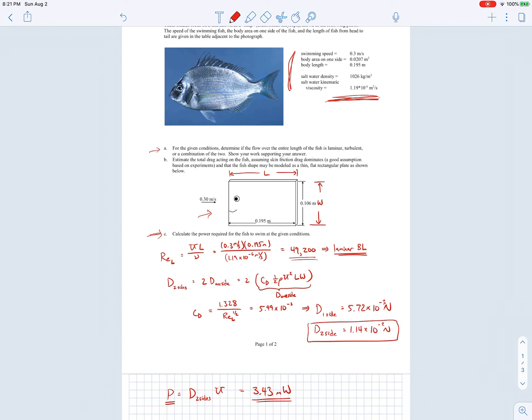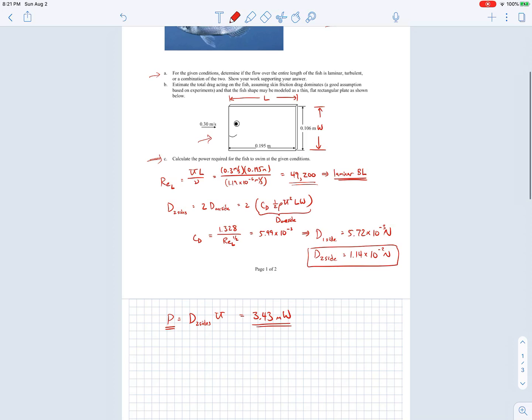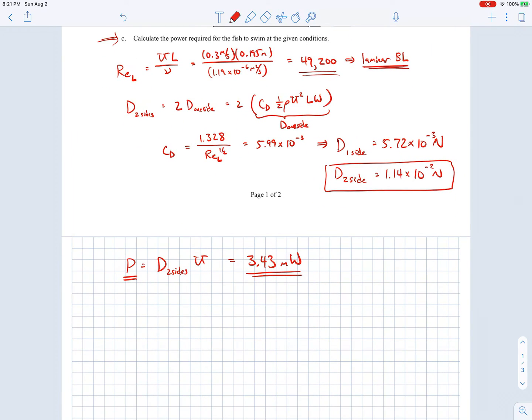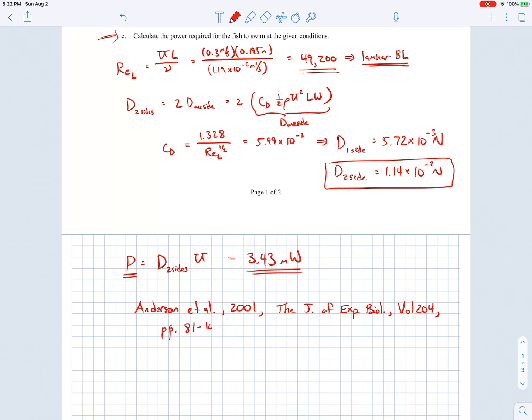There actually is a nice paper on boundary layer characteristics for flow over swimming fish. That paper is given by Anderson et al, 2001, and it's called the boundary layer of swimming fish. It's in the Journal of Experimental Biology, volume 204, pages 81 through 102. This problem actually was inspired by that particular paper.